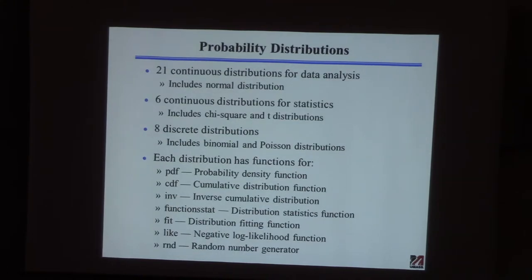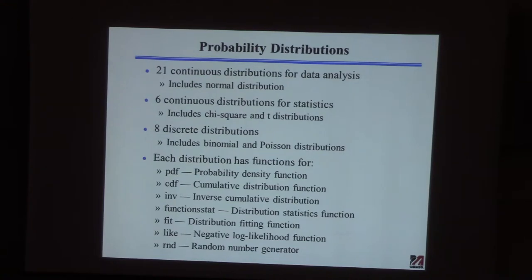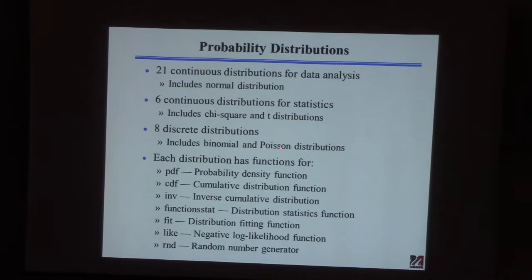So far we've introduced five distributions: the binomial distribution, the Poisson distribution, the normal distribution, the T distribution, and the chi-square distribution. MATLAB has 35 different distributions built in — 21 continuous distributions for data analysis, 6 continuous distributions for statistical analysis like hypothesis testing and confidence intervals (including chi-square and T), and 8 discrete distributions including binomial and Poisson.